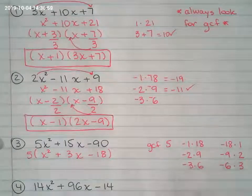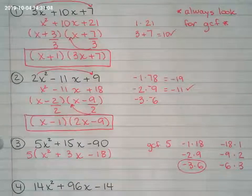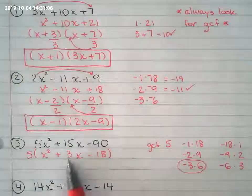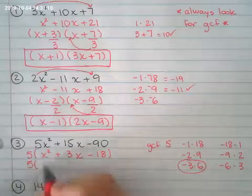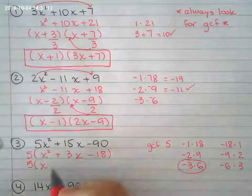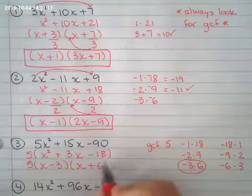And that'll be this guy right here. When you add them together, they add up to positive 3. So your factors are negative 3, x minus 3, x plus 6.